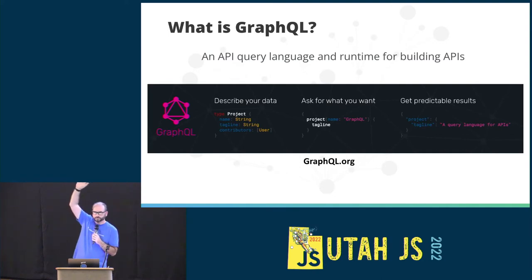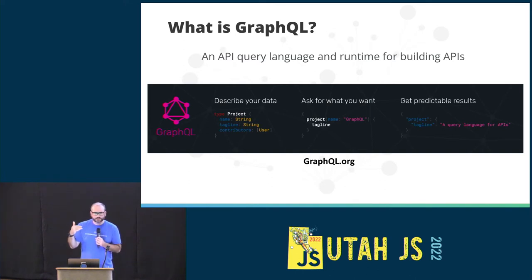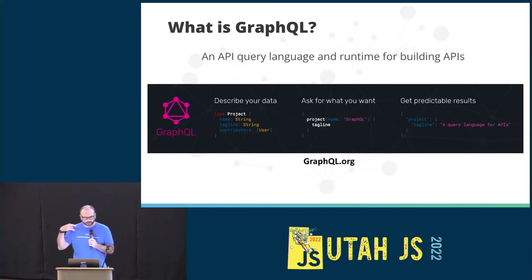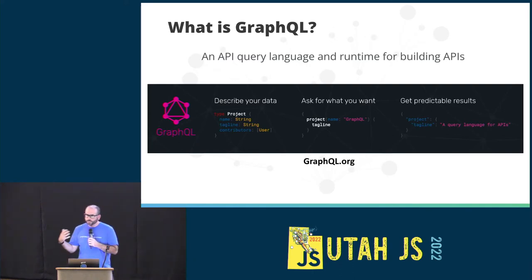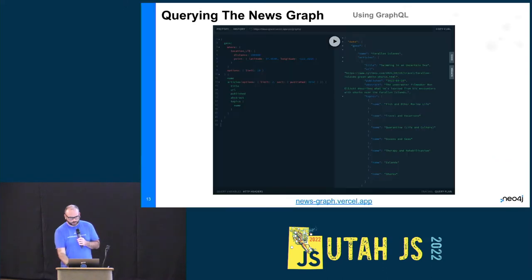GraphQL is an API query language and a runtime for building those APIs. With GraphQL, we start by describing the data using GraphQL type definitions, which describe the data available in the API and how that data is connected — this is the graph part of GraphQL. For example, we have a Project type with name, tagline, and a list of contributors that references a User type. At query time, the client asks for whatever piece of that data graph they need, and because we have a schema, we know exactly what data we're getting back.